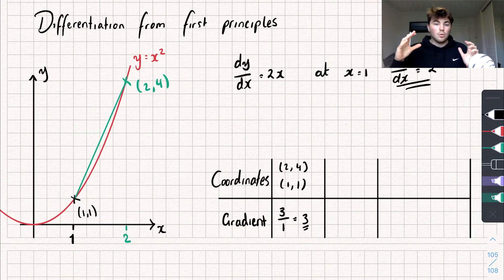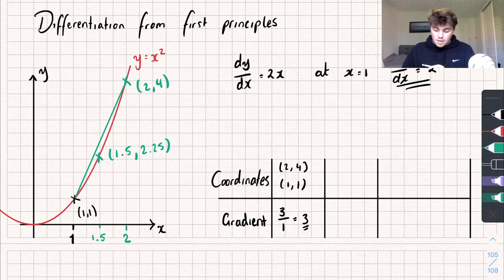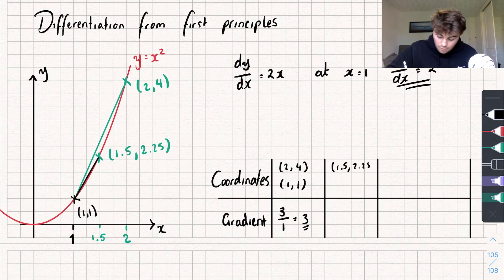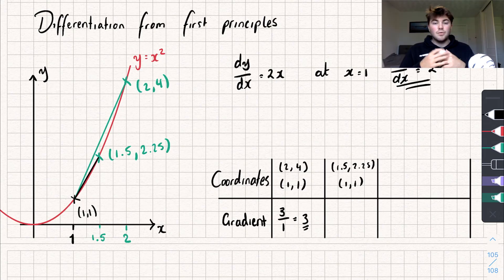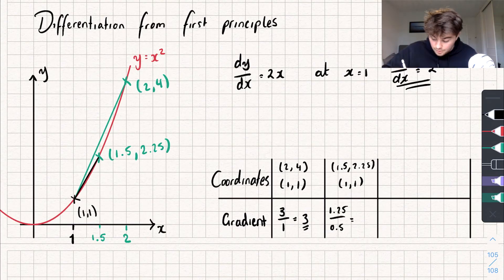Now let's see what happens if I bring that second coordinate closer to the point I'm interested in. So let's do a second point at x equals 1.5, which is going to have the coordinates 1.5, 2.25. We're going to connect a line from the point 1, 1 to the point 1.5, 2.25. And let's find the gradient of this new line. The difference in y is 2.25 subtract 1, so 1.25, divided by the difference in x, which is 1.5 subtract 1, which is 0.5. And if I work that out I get a new gradient of 2.5.